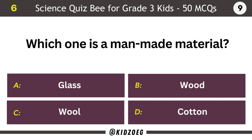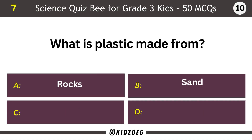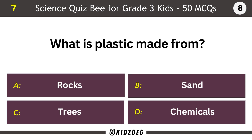Which one is a man-made material? Glass. What is plastic made from? Chemicals.